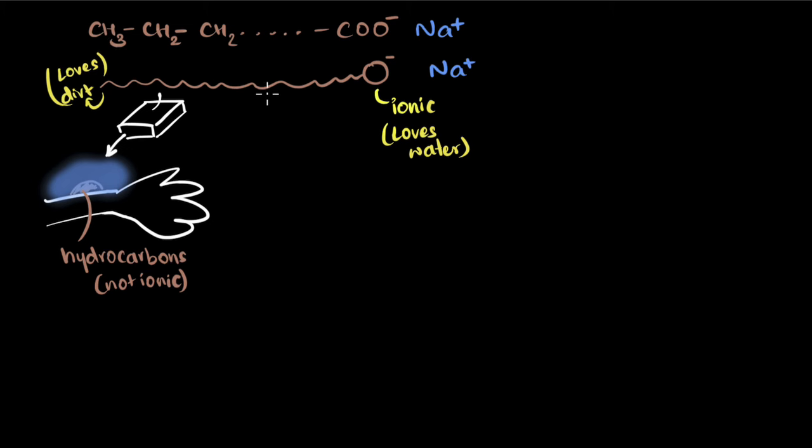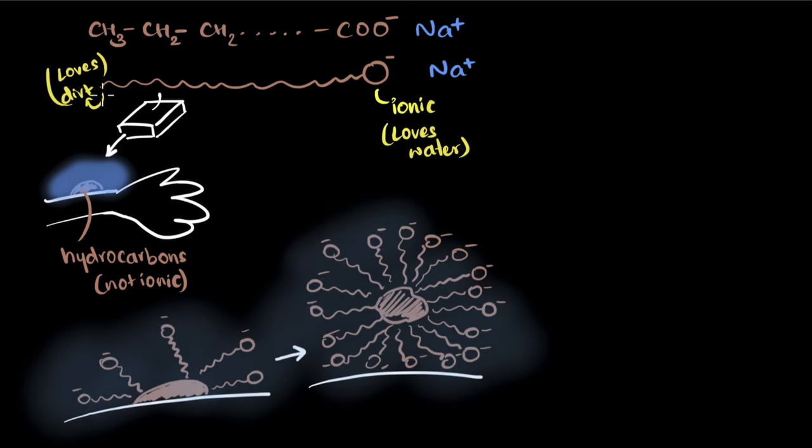So immediately you can see what this is going to do. The tail end of these long chain fatty acids, they are going to stick to the dirt. Whereas this ionic end is going to try and stick to water. As a result, it's going to pick up the dirt and form these spherical things, which we call micelles. These are called soap micelles.